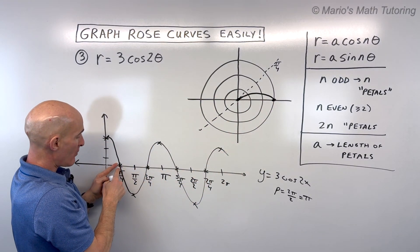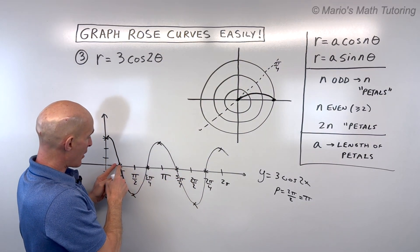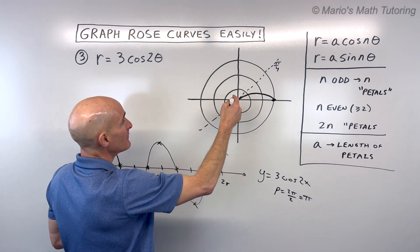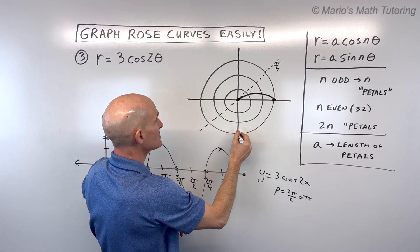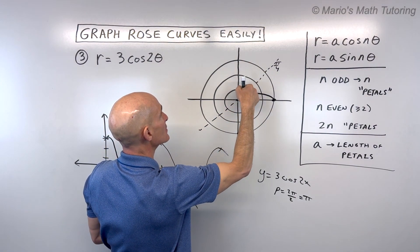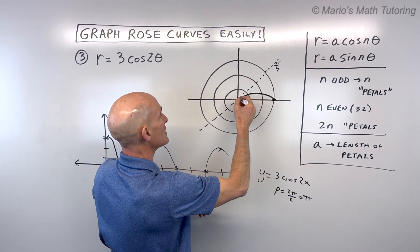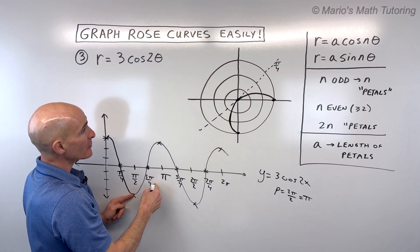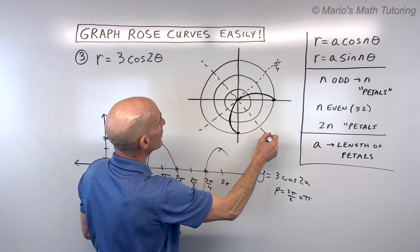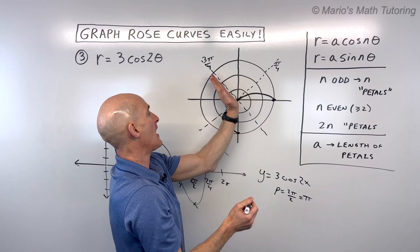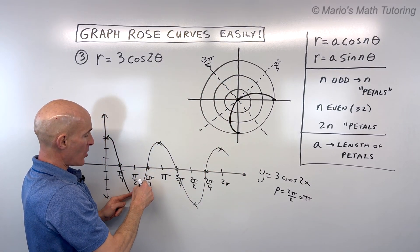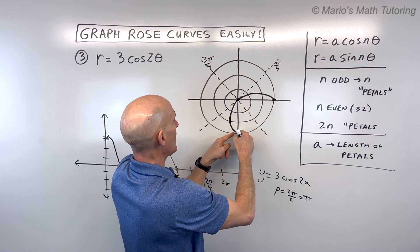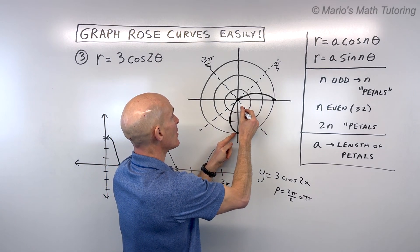From π/4 to π/2, the r value goes negative, reaching negative 3. So instead of being out this way at 3, we go through the pole to negative 3 on the other side. Then from π/2 to 3π/4, the r value is still negative but becoming smaller — approaching 0. So as we're rotating, we go through the pole and reel it back in to 0.